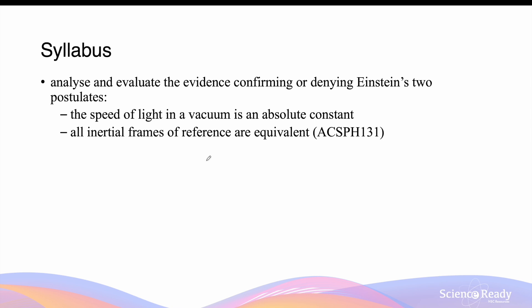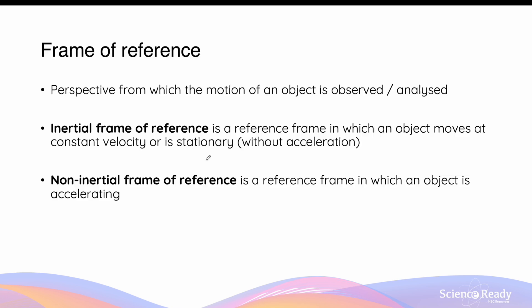This video is on the two postulates of special relativity. The frame of reference refers to the perspective from which the motion of a particular object is observed or analysed. There are two main kinds of frames of reference. An inertial frame of reference is a perspective in which an object is moving at constant velocity or stationary, both of which are without acceleration.